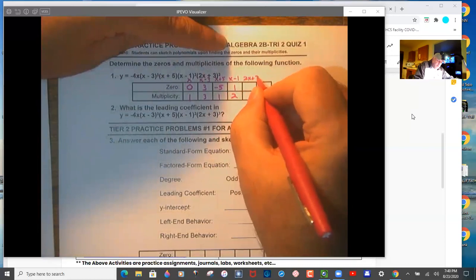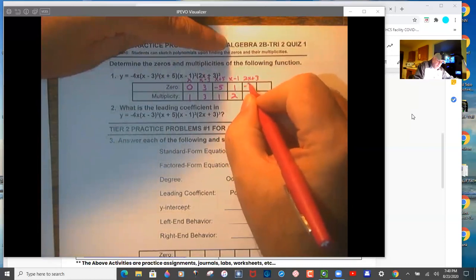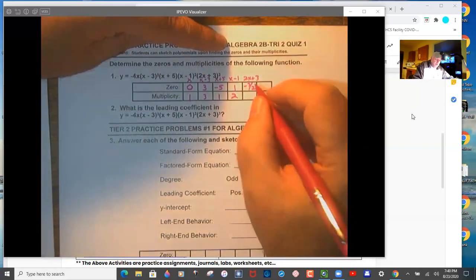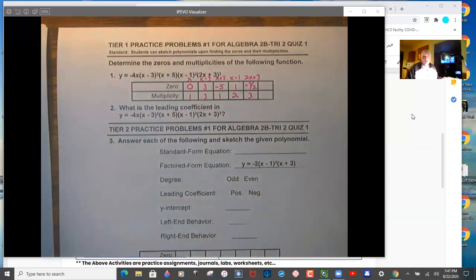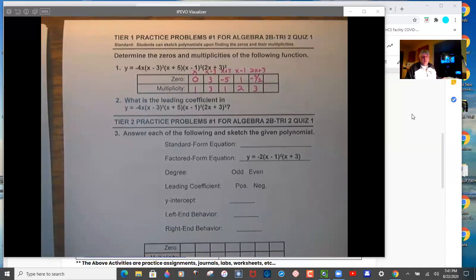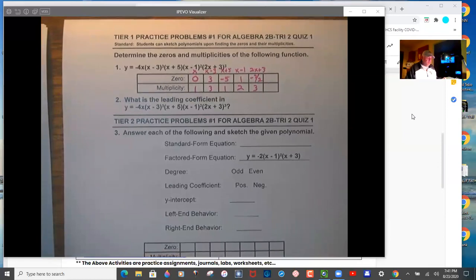And then two x plus three, its zero is negative three halves and a multiplicity of three. Pretty simple to do, you just have to go left to right with it.